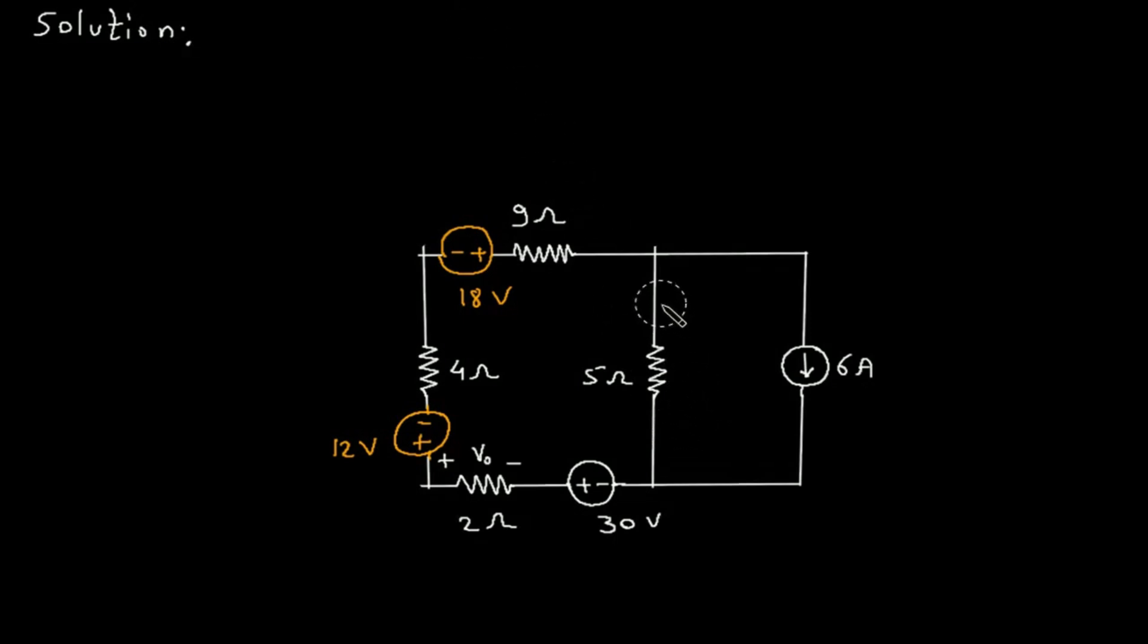Then this will be here. The polarity will be positive here and negative here. So this will be 30 V.